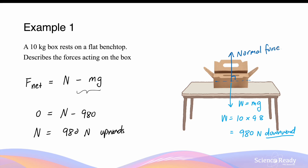Conversely, if the normal force, for whatever reason, is greater than the weight force, that tells us that the box would actually start to go upwards away from the bench top, which is a very unlikely phenomenon. So since the box is resting peacefully on the bench top, the net force acting in the vertical dimension is equal to 0N.